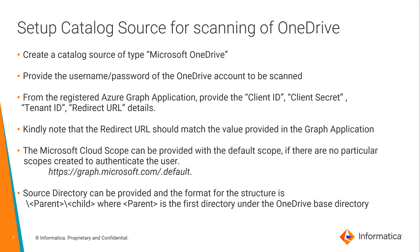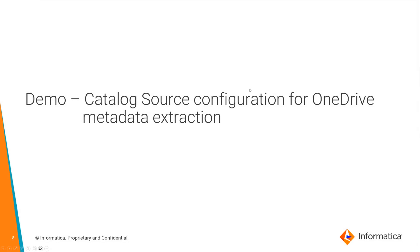An optional source directory can be provided to limit the scan to a particular parent directory. The format for providing the source directory structure is as shown. In this case, the parent is the first directory under the OneDrive base directory. Let's see a quick demo on how to set up the catalog source configuration in Metadata Command Center.